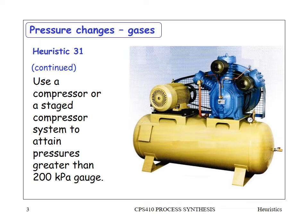Continuing with heuristic 31: use a compressor or a staged compressor system to attain pressures greater than 200 kPa gauge. What's shown is an air compressor — normally air compressors compress to about 800 kPa and therefore you need a staged compressor. The one shown is belt-driven with a three-stage compressor.